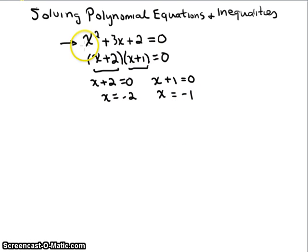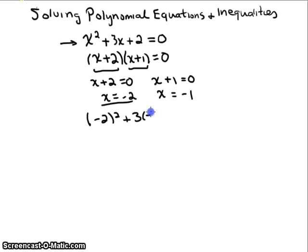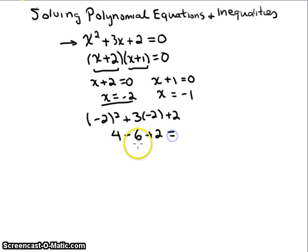Let's go back to our original equation and make sure this works. If we plug in x = -2, we get (-2)² + 3(-2) + 2. Negative two squared is positive four; three times negative two gives us negative six, plus two. Four minus six gives us negative two, and negative two plus two gives us zero. So that works.